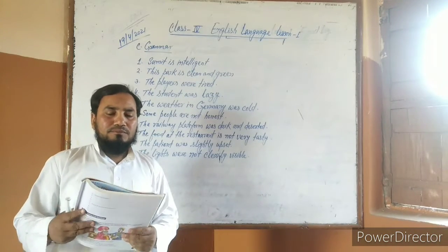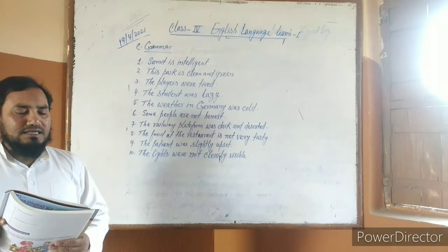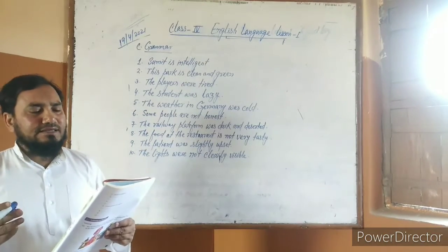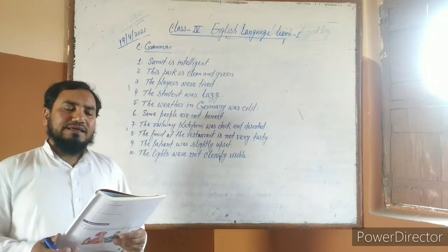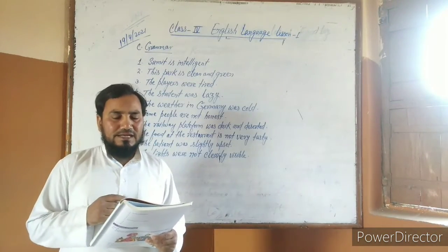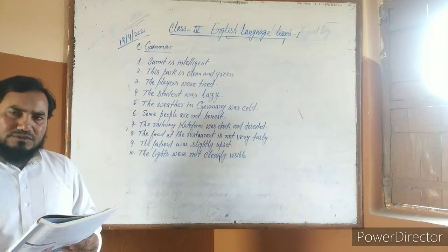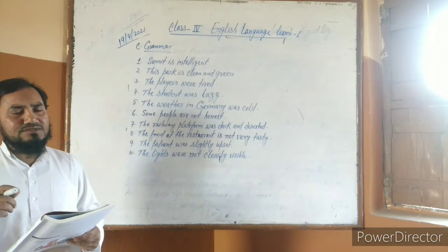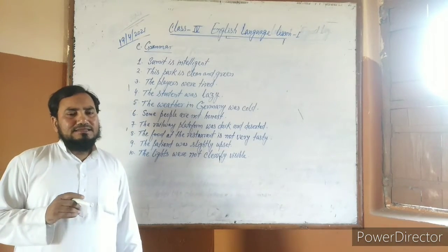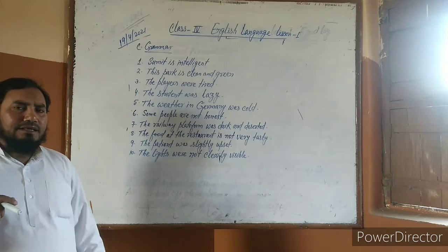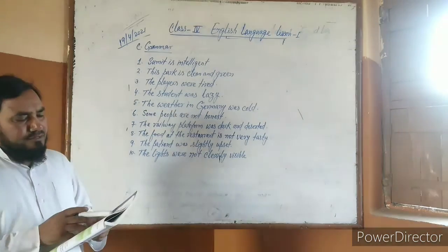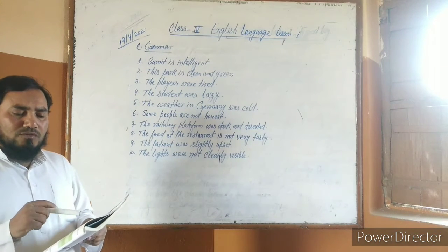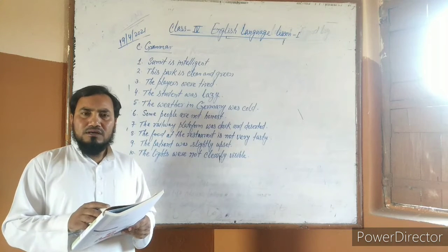The structure is: subject plus appropriate form of being — is, am, are, was, were — plus the adjective. This sentence is created by subject, verb, and adjective. Verb means is, am, or are. This structure is used for both singular and plural.